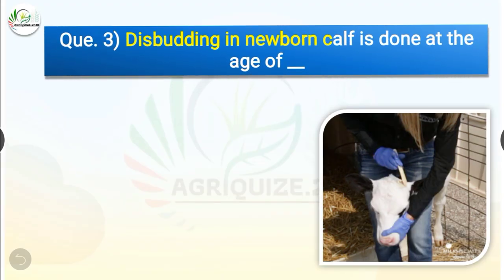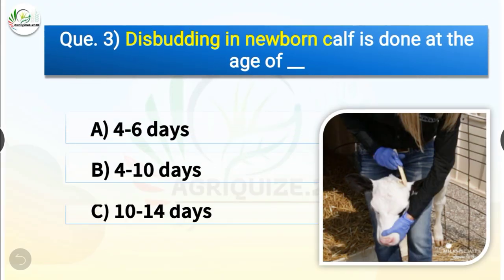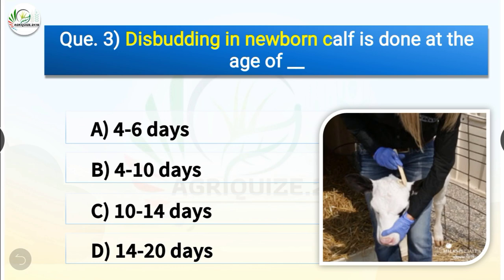Question number 3. Disbudding in a newborn calf is done at the age of dash. The options are 4 to 6 days, 4 to 10 days, 10 to 14 days or 14 to 20 days. The correct answer is option B, 4 to 10 days. So disbudding in a newborn calf is done at the age of 4 to 10 days.